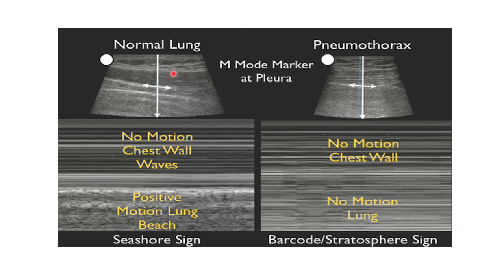In M-mode with a normal lung, you see the seashore sign with a granular pattern and barcode pattern. If there is a pneumothorax, the granular pattern disappears and the entire image appears as a barcode. This is called the stratosphere sign.